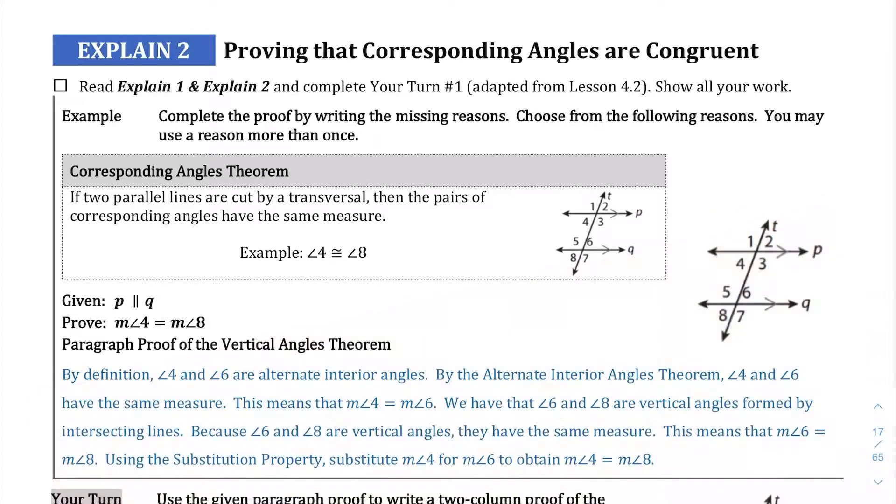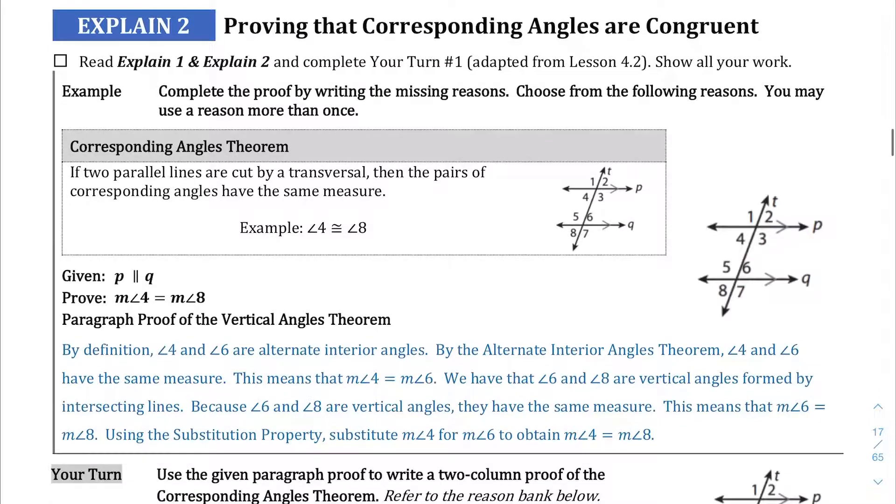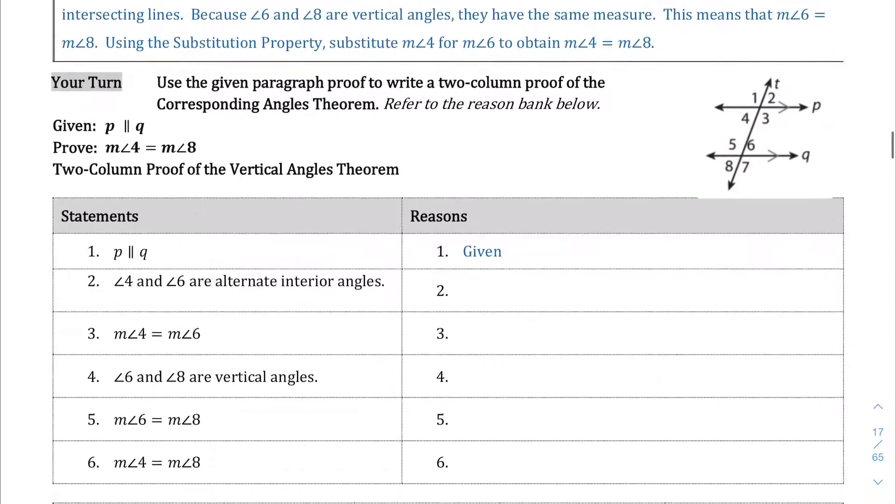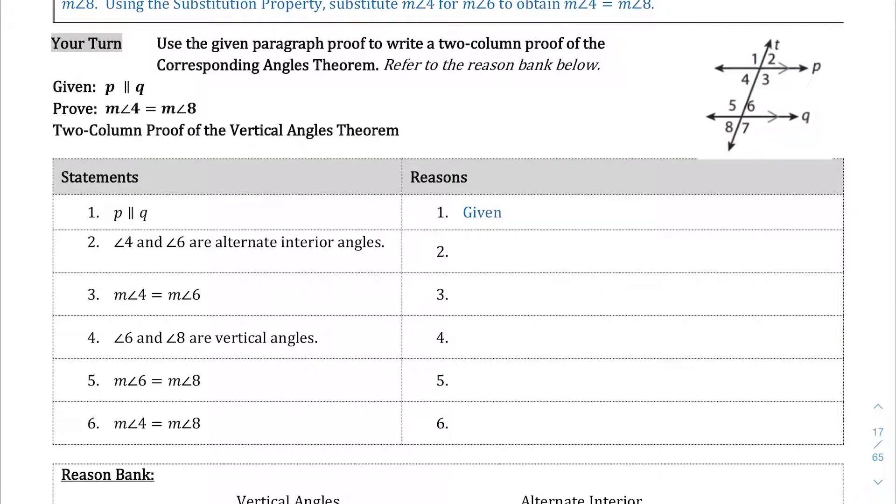We're on the explain section for lesson 4.2, and we're going to be proving that corresponding angles are congruent. You can go ahead and read this first paragraph proof of the vertical angles theorem. We're going to go down here and go through a much more traditional proof of the vertical angles theorem.